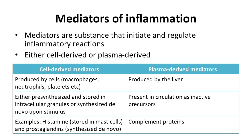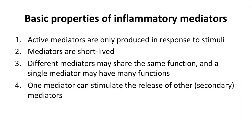Examples of cell-derived mediators include histamine, which are pre-synthesized and stored in mast cells, and prostaglandins, which are synthesized de novo. An example of plasma-derived mediators are complement proteins. Active mediators are only produced in response to stimuli and are also short-lived, meaning they are degraded quickly after activation. Different mediators may share the same function, and a single mediator can have many functions. One mediator can also stimulate the release of other secondary mediators, making their functions quite diverse.